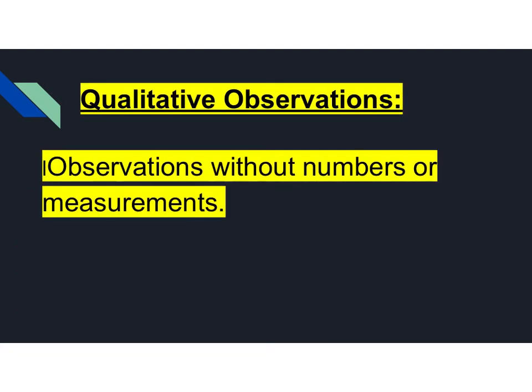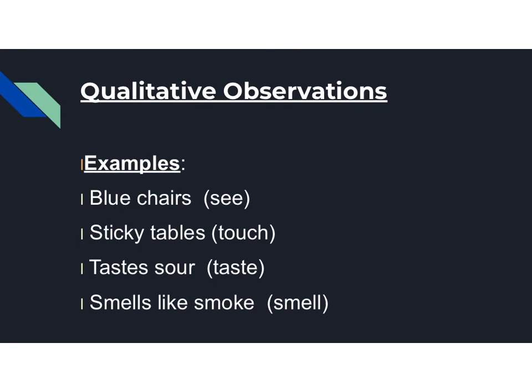The second type of observation is the qualitative observation. These are observations without numbers or measurements. Some examples of qualitative observations: blue chairs — using your sense of sight. Sticky tables — using your sense of touch. Tastes sour — using your sense of taste. Smells like smoke — using your sense of smell. These are all qualitative observations because there are no numbers or measurements included.